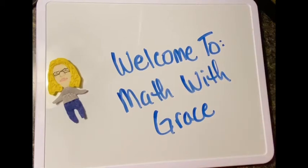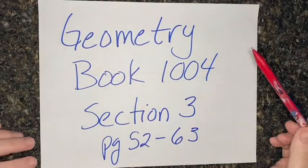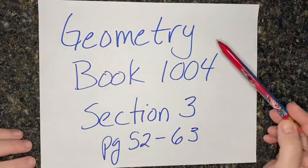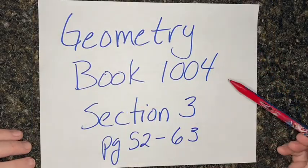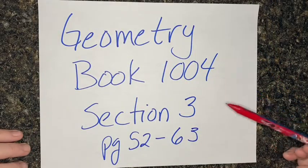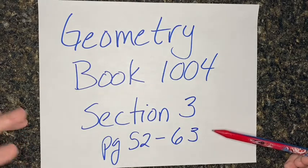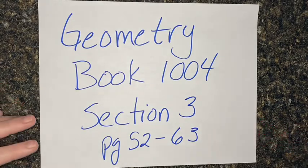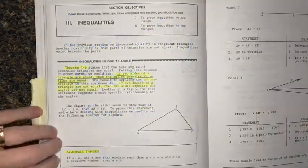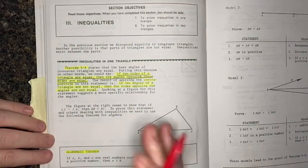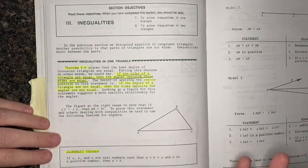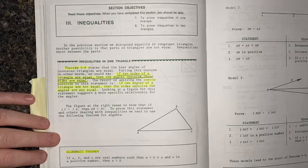All right, everybody, welcome to Math with Grace. In this video, we'll be covering Geometry Book 1004, Section 3 from pages 52 to 63. Section 3 starts on page 52, and it's all about inequalities.